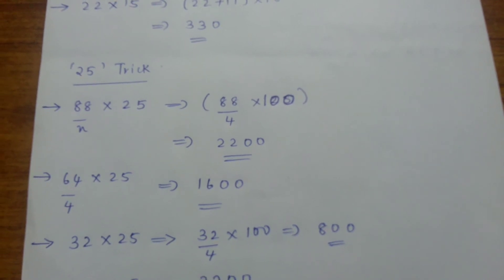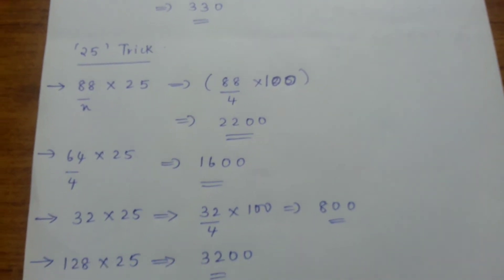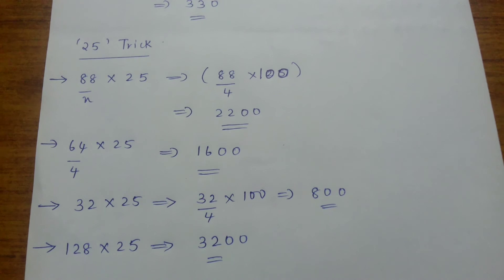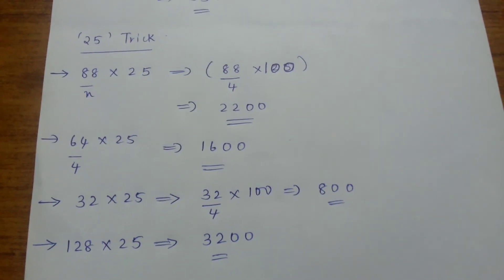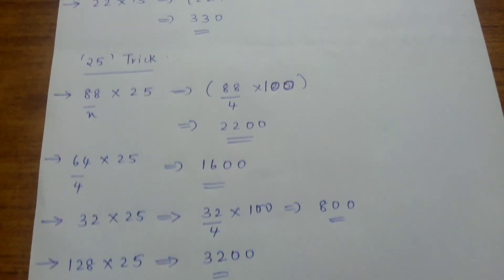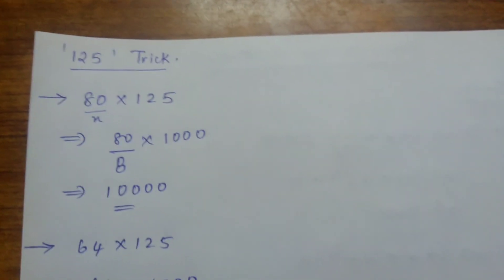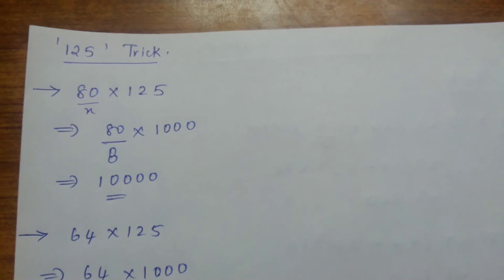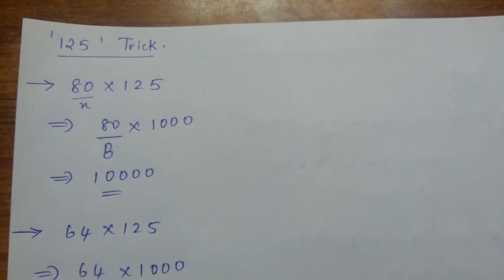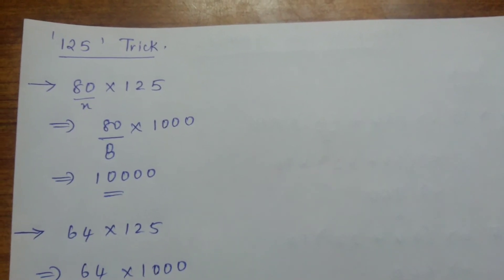128 divided by 4 is 32, 2 zeros. Now coming up to the 125 trick. That is 80 into 125. Here instead of 4 we use 8. 80 divided by 8 into 1000, that is 10,000.